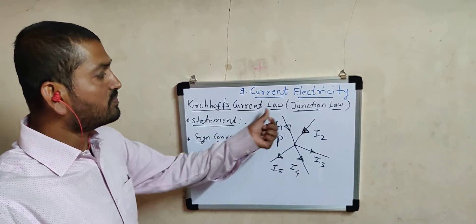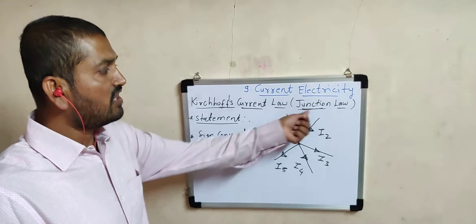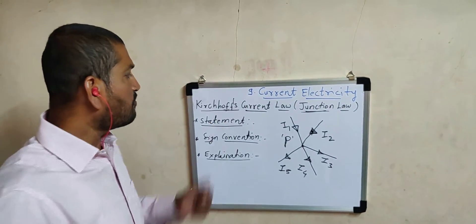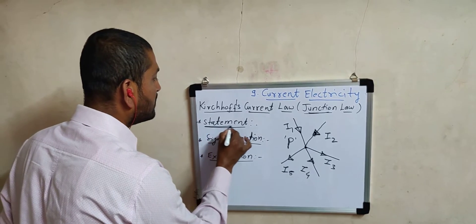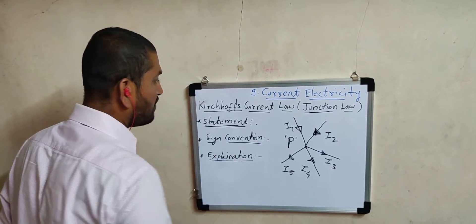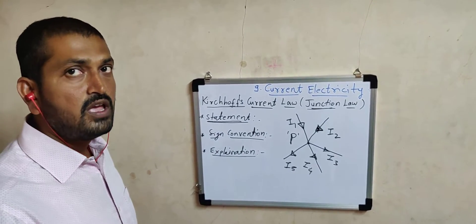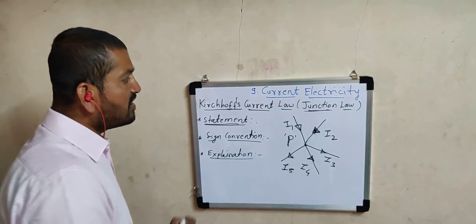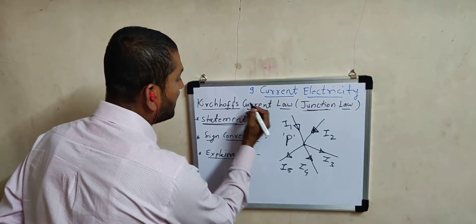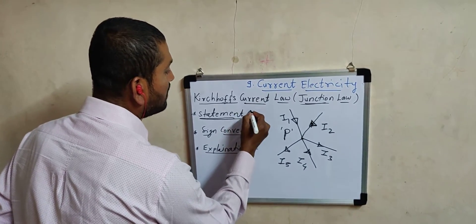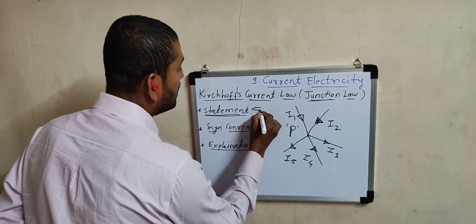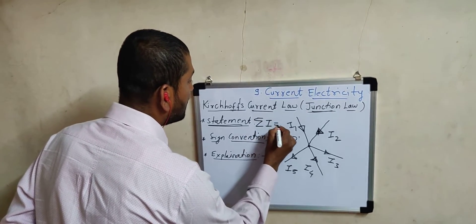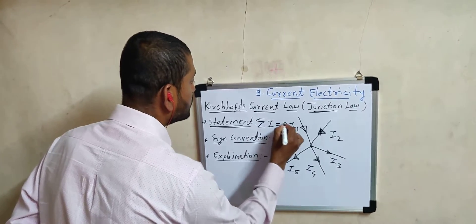Hence the name Kirchhoff's current law, or junction law. Now we will consider the statement. Kirchhoff's current law states that the algebraic sum of electric currents at any junction is always equal to zero — that is, sigma I is always equal to zero.